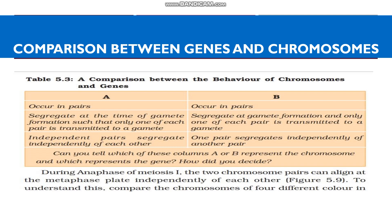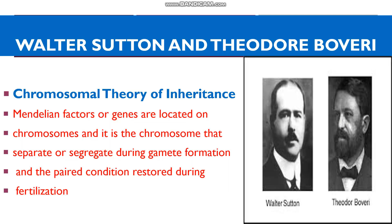Based on these similarities, Sutton and Bovery proposed the Chromosomal Theory of Inheritance. The theory states that Mendelian factors or genes are located on chromosomes, and it is the chromosomes that segregate during gamete formation with the paired condition restored during fertilization.